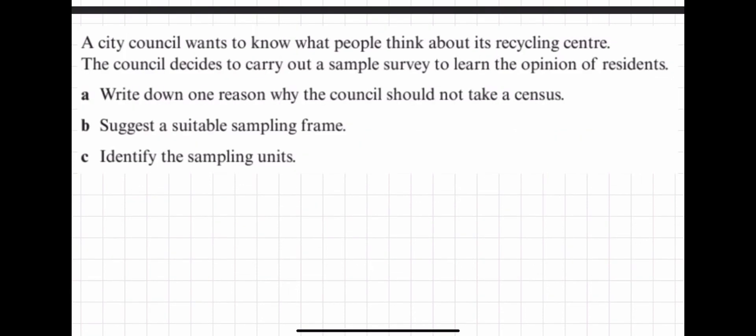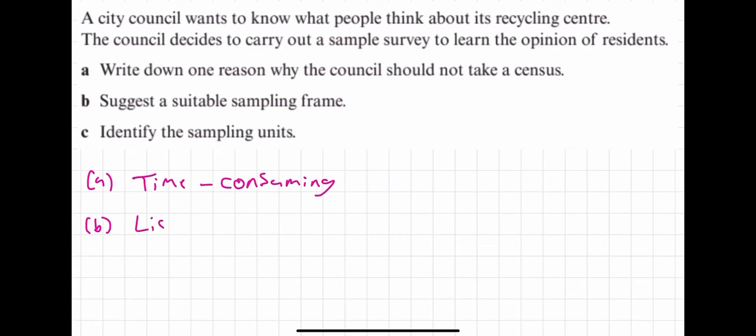Right, now the final question that we're going to look at before we get into the actual specifics of different sampling methods is this one. A city council wants to know what people think about its recycling center. The council decides to carry out a sample survey to learn the opinions of residents. Write down a reason why the council should not take a census. Well, that's just going to be time consuming, way too time consuming. Suggest a suitable sampling frame. Well, it can just be list of people who live in a city, list of residents.